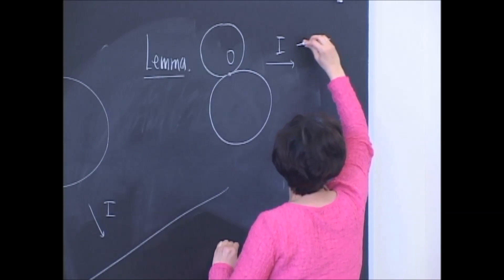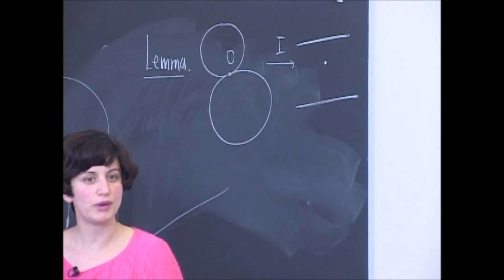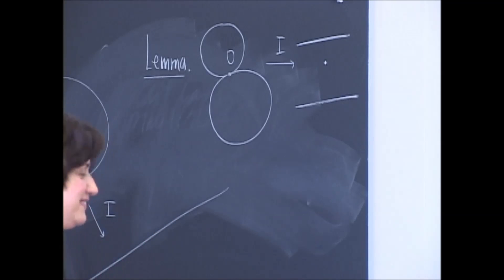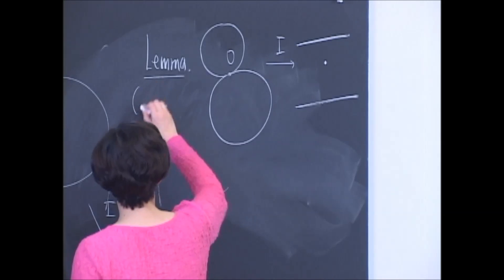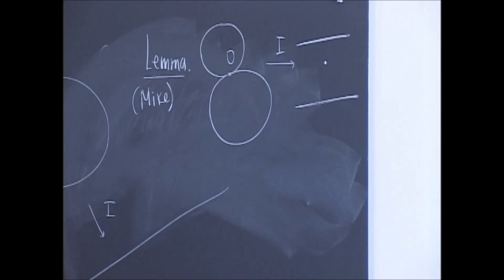So after inversion, the picture is very pretty. It looks like this. Two parallel lines. So that's Mike's lemma. Let's write this here. This is how mathematicians get their theorems in history.